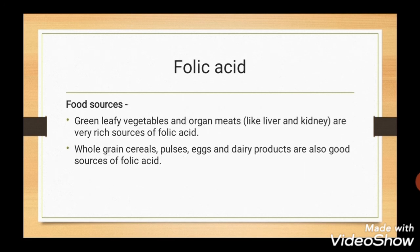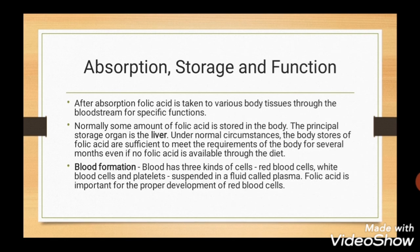Folic acid. Food sources are green leafy vegetables and organ meats. Other good sources include whole grain cereals, pulses, eggs, and dairy products. After absorption, folic acid is taken to various body tissues through the bloodstream for specific functions, and some amount is stored in the liver. Under normal circumstances, the body stores of folic acid are sufficient to meet requirements for several months even if no folic acid is available through the diet. The main function of folic acid is blood formation — it is important for proper development of red blood cells.